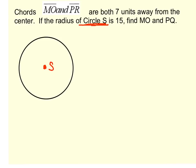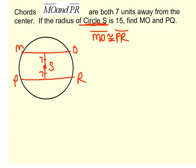MO and PR are both seven units away from the center. So what I'm going to do is I'm going to go like this. I'm going to say that that's seven, and that's chord MO. I'm going to do the same thing this way. I'm going to say that this is also seven, and this is chord PR. So we know that these are equidistant, which now remember means that MO has to be congruent to PR, because if the chords are equidistant from the center, then they are congruent.